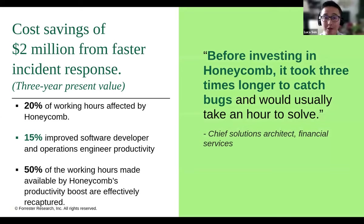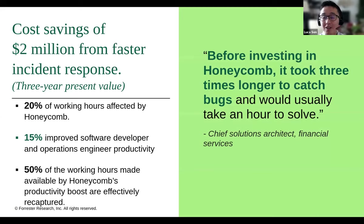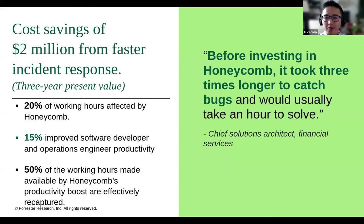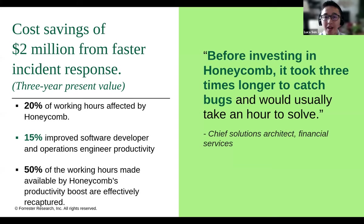Our second quantified benefit was cost savings of $2 million from faster incident response. With Honeycomb, customers decreased mean time to detect and resolve issues, improved query response times, found bottlenecks quicker, and reduced time on call. Developer productivity also improved as a result of information sharing. In the composite organization, about 20% of developers' working hours are spent within Honeycomb. Developers reduced the time to respond to all levels of incidents by 15% using Honeycomb compared to their prior environment, with a 50% productivity recapture rate applied to other tasks.